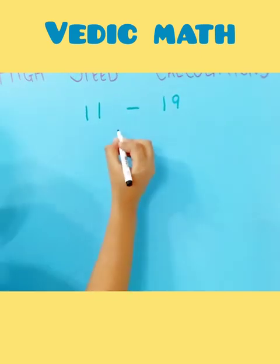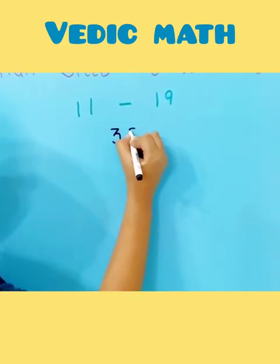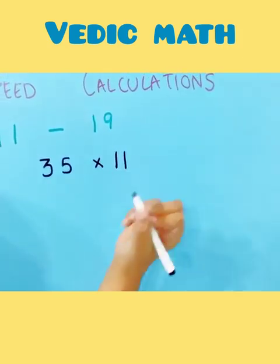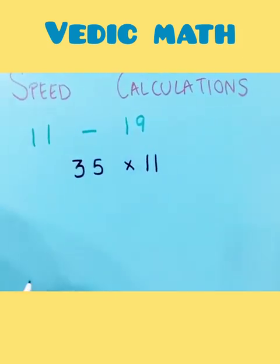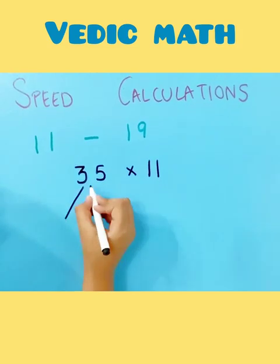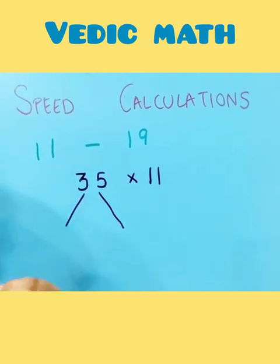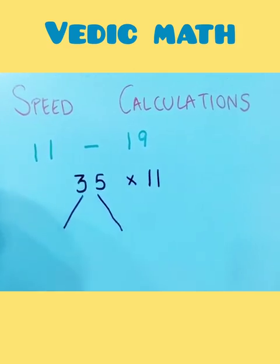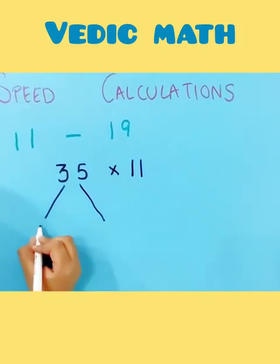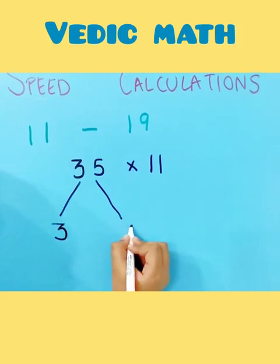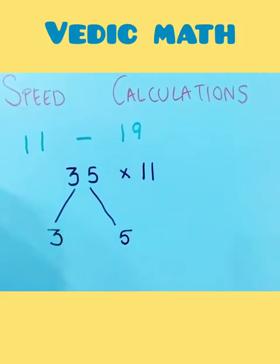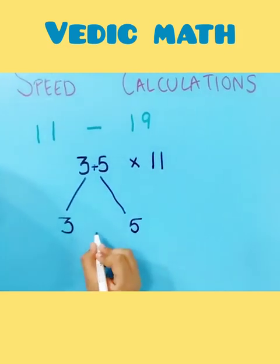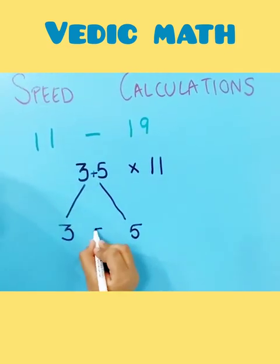I'm going to demonstrate a method to multiply any large number with 11 to 19 in a few seconds. Let's take an example: 35 multiplied by 11. First, split the two numbers and then add them to get the middle number. So 3 and 5 go on the corners, and the sum of 3 and 5, which is 8, is the middle number.